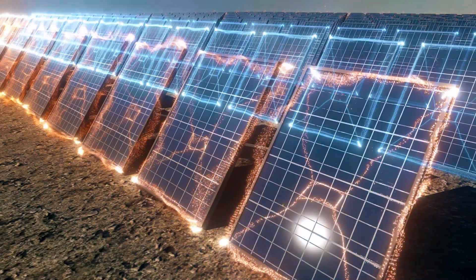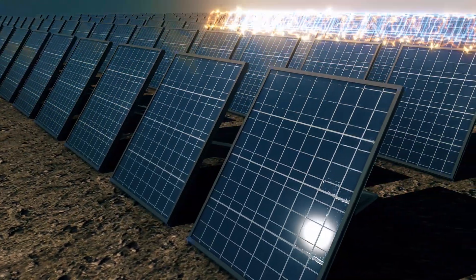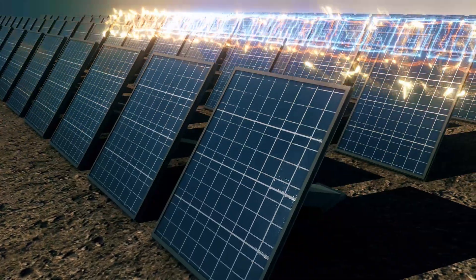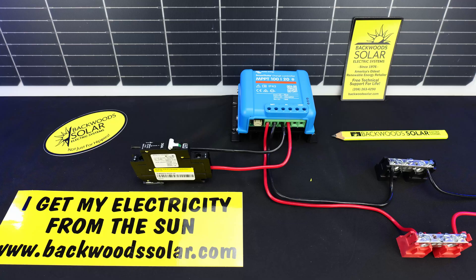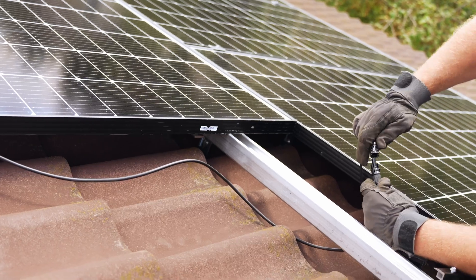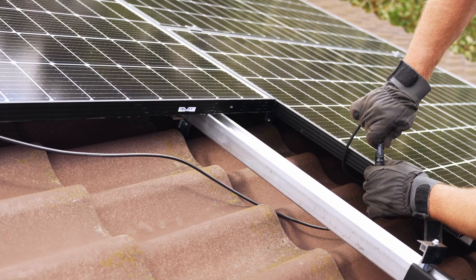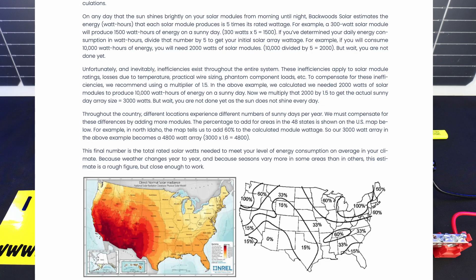This number assumes 100% efficiency, which doesn't happen in the real world. So if we take that 2,000 watts, we're going to use a 1.5 multiplier for expected efficiency losses. This would be wire losses, cabling, equipment, and so on. So using that 2,000 watts with our efficiency loss, we now need a 3,000 watt array to produce that 10,000 watt hours or 10 kilowatt hours.